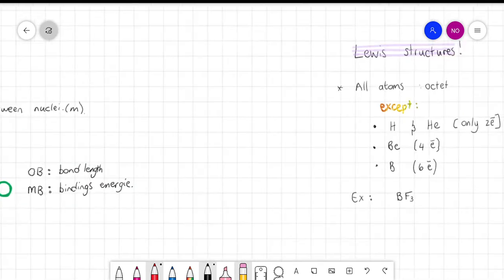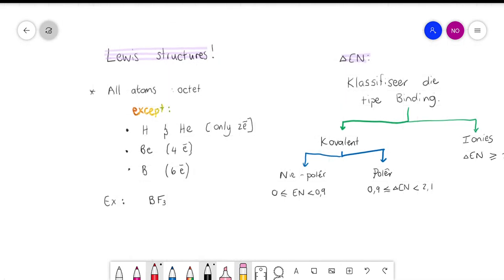Okay guys, I just want to make a video about Lewis structures and at the same time look at how we classify different bonds as covalent polar and non-polar, or as an ionic bond.